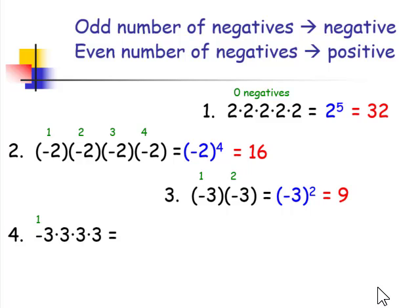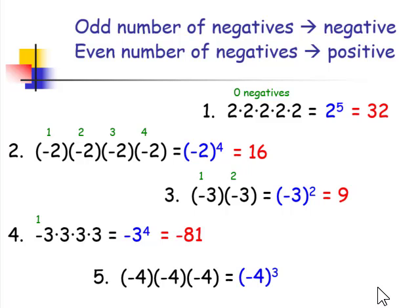In our fourth example, we have 1 negative being multiplied, which is odd, therefore our result is a negative 81. And in our fifth example, we have 3 negatives being multiplied, therefore our result will be a negative 64, because 3 is odd.